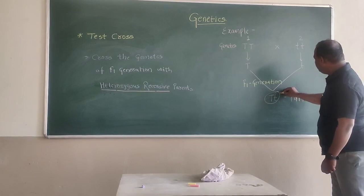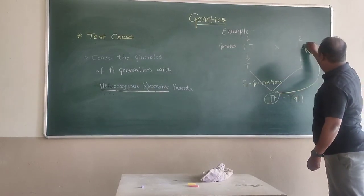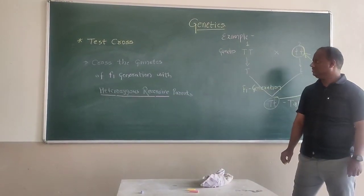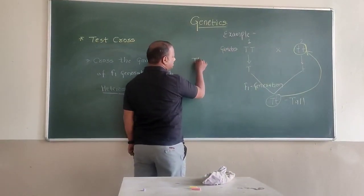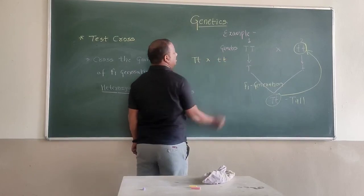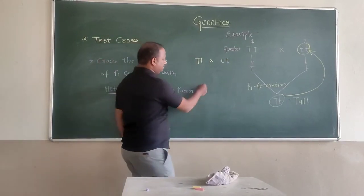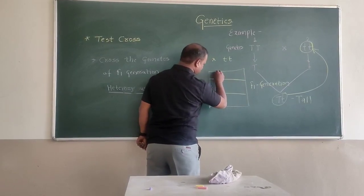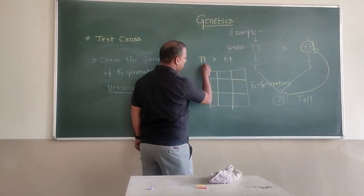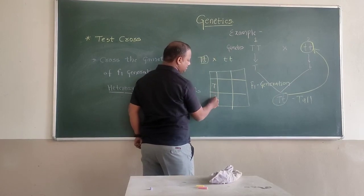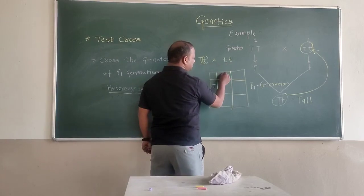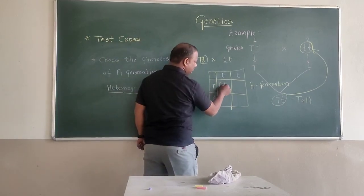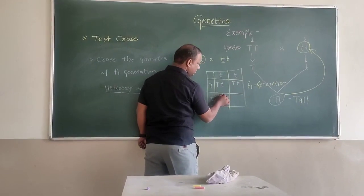When the F1 generation gets crossed with a homozygous recessive pattern, we cross the F1 generation with the homozygous recessive pattern. What we get is: capital T and small T, then small T and small T — giving us capital T small T and capital T small T.